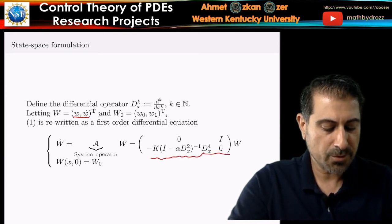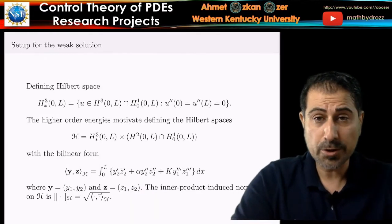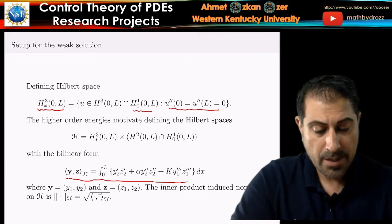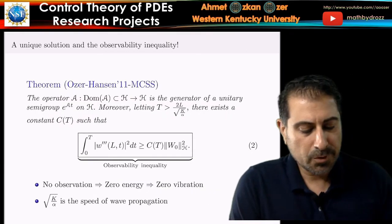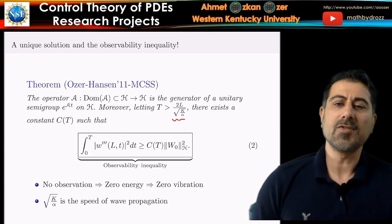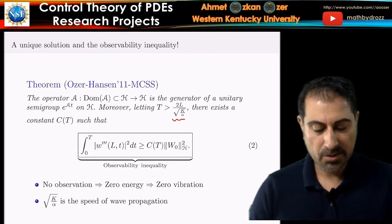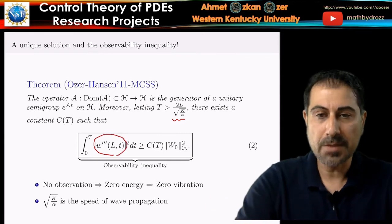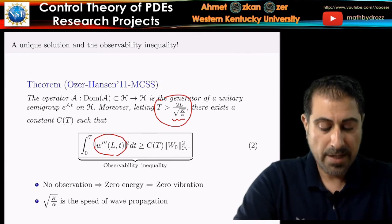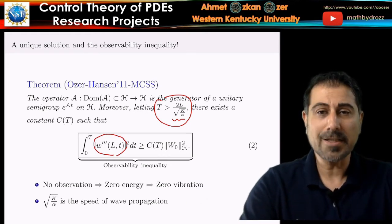We define solutions in a higher-order energy space with an inner product and induced norm. Then we prove that if T is greater than twice the length divided by the speed of wave propagation on the beam, we prove observability — meaning if you measure the third derivative at the tip of the beam for a sufficient amount of time, the observability inequality holds and the PDE model is exactly observable.